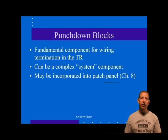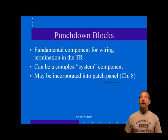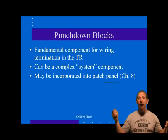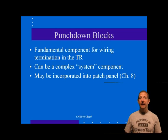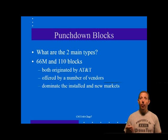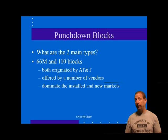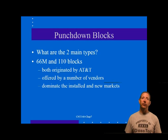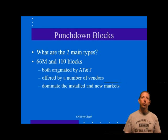Let's talk about punch down blocks. The fundamental component for copper wiring termination in the TR is the punch down block. The punch down block can take many forms and has, over the years, evolved into a rather complex system component. Punch down can even be incorporated into a patch panel. There are two main types of punch down blocks in common use: the 110 block and the older 66M block, both originated by AT&T. Both types are now offered by a number of companies, and versions of these block terminations are incorporated into many products including outlet connectors and patch panels. These two punch down types dominate the installed and new markets.